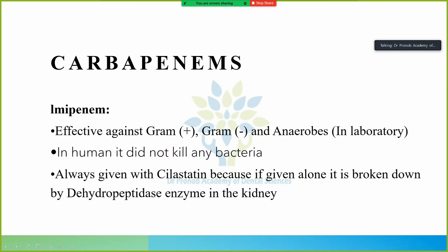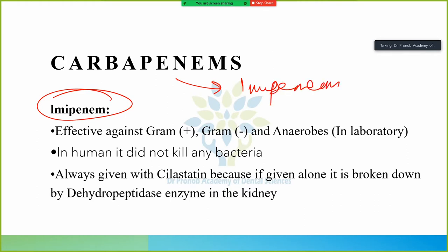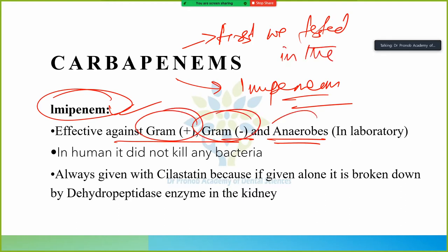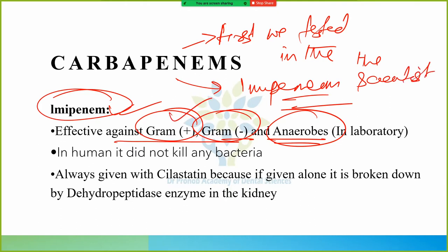In the carbapenem group, imipenem is a key drug. Imipenem is effective against gram positive, gram negative, and anaerobes. Scientists first tested it in the laboratory and found that it was acting against gram positive, gram negative, and anaerobes — they were very happy it was working across all these categories.